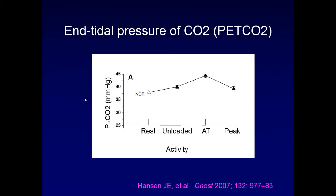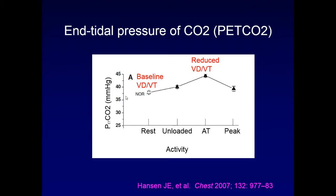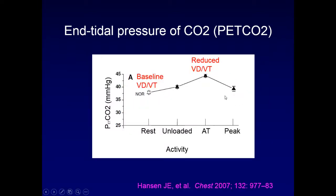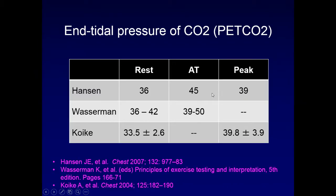A study by Hansen published in Chest in 2007 examined normal patients. Starting from a resting end-tidal CO2 baseline, as individuals begin to exercise their end-tidal CO2 goes up and dead space goes down because they utilize more alveoli. As they continue to exercise past anaerobic threshold, the dead space ventilation increases again. The pattern shows an increase in end-tidal CO2 from rest to anaerobic threshold, and then a decrease from anaerobic threshold to peak — almost an inverted letter V.